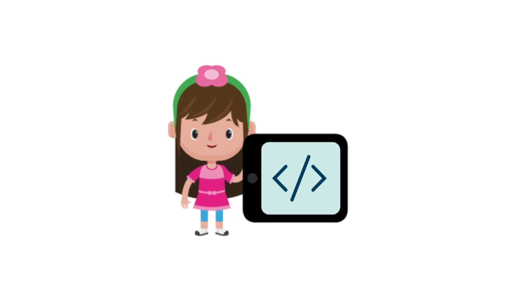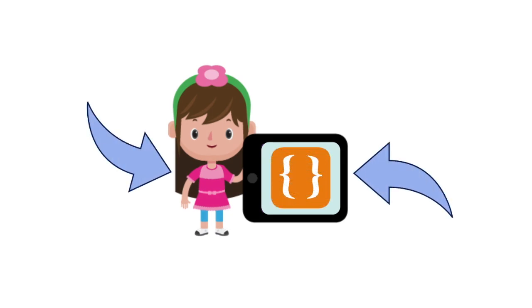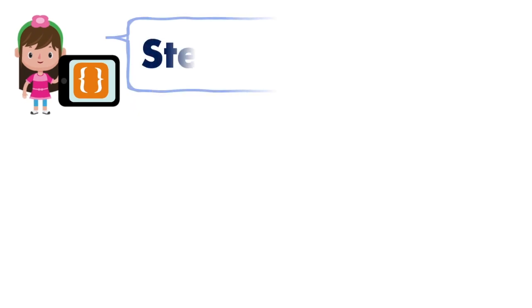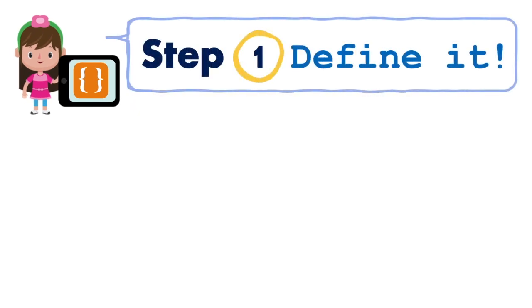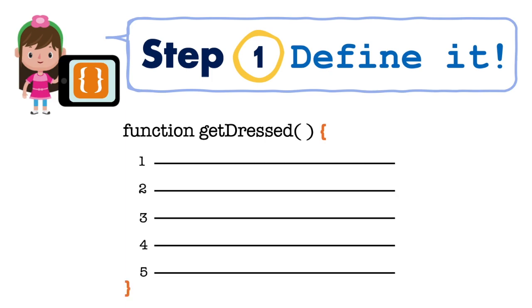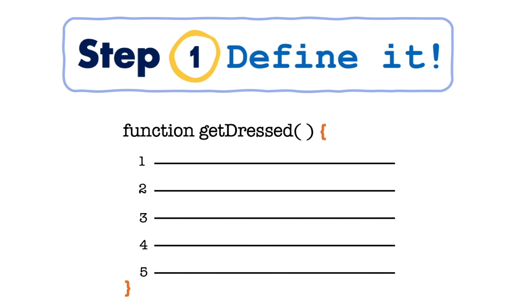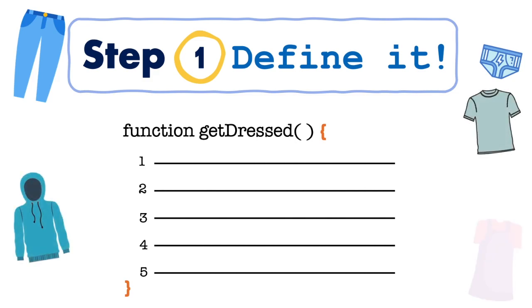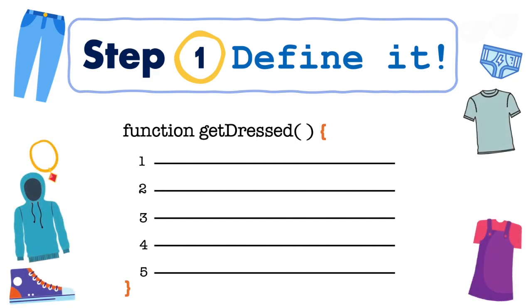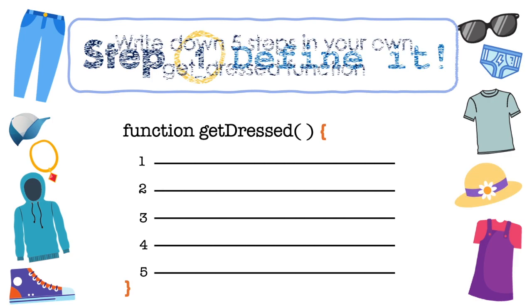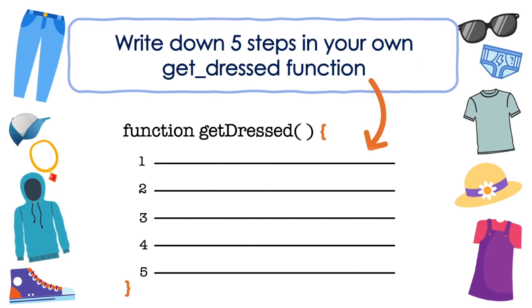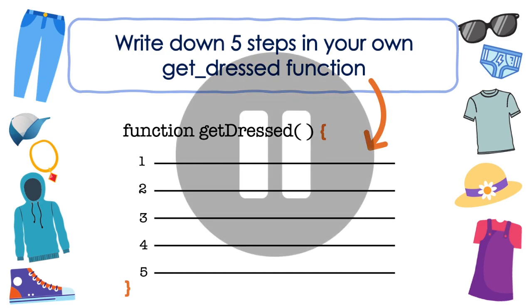Let's take a deeper look at how a programmer creates and uses a function. Step one: define the function. This means deciding what sequence of steps you want to happen each time the function is used. Take a moment to think about the steps you follow when you get dressed in the morning. What clothes do you put on first? How many items do you wear? Do you put on any accessories like hats, necklaces, or glasses? Write out at least five steps. You can pause the video here to finish writing.